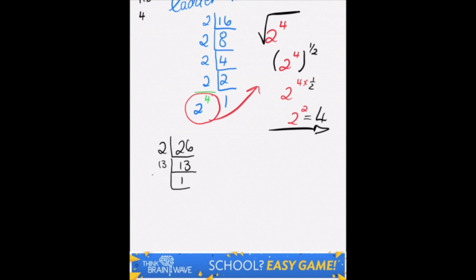So 26 is equal to the square root of 2 times by 13. That is provided 26 is underneath a square root sign.